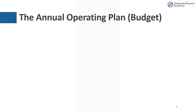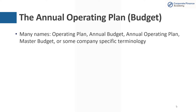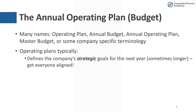You'll hear this called different things — operating plan, annual operating plan, a master budget — different companies have specific terminologies, but they're all effectively the same thing. What you're trying to do is define the company's strategic goals for the next year, and sometimes this might be for two, three, or four years. This really helps to get everybody aligned — the sales team, the operating team, the finance team, HR — everybody knows what the intention is.